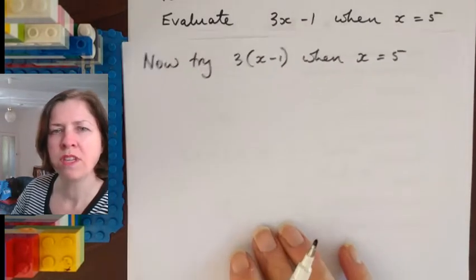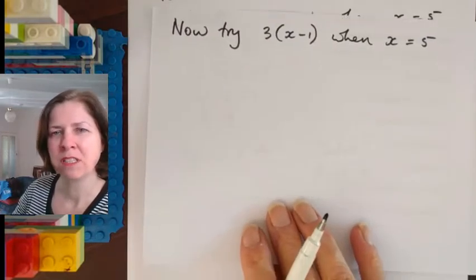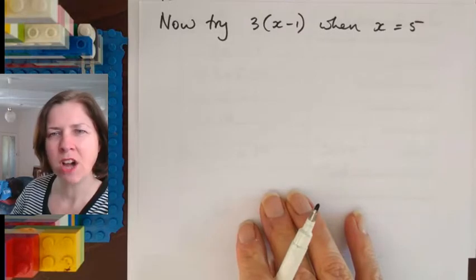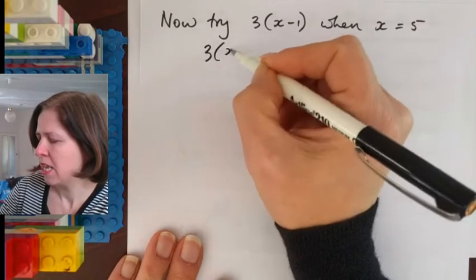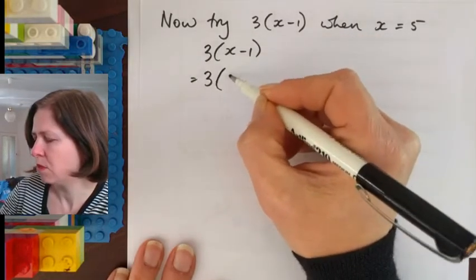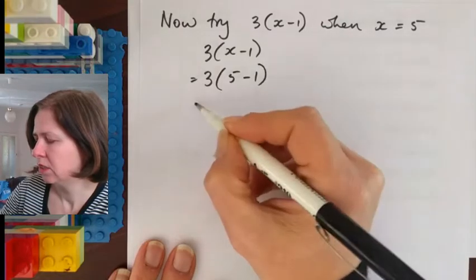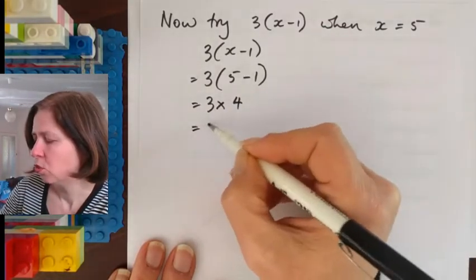Now I just want to show you how important it is to get the order of these things right. We're going to do this example. See how it looks nearly the same but it's different. So let's look at this. 3 times x minus 1 when x is 5. So 3 times x minus 1 when x is 5 is going to give me 3 times 5 minus 1 which is 3 times 4 which is 12.